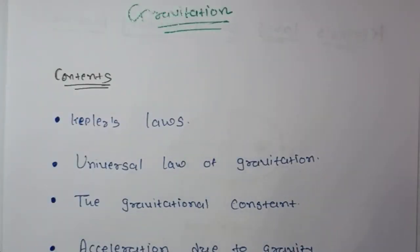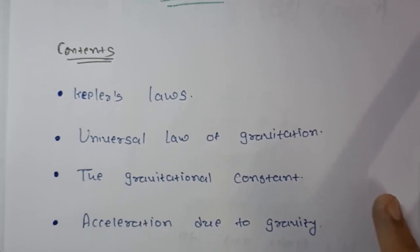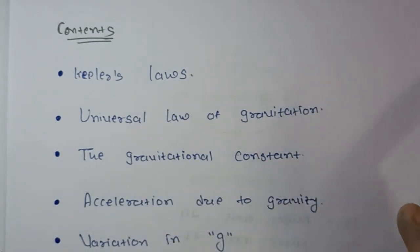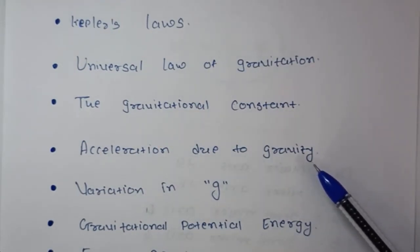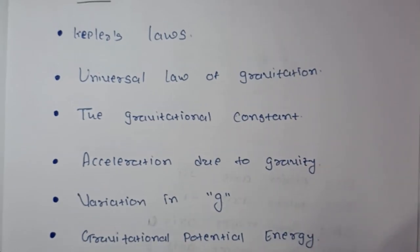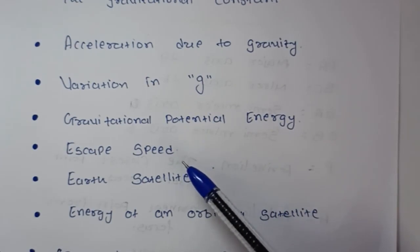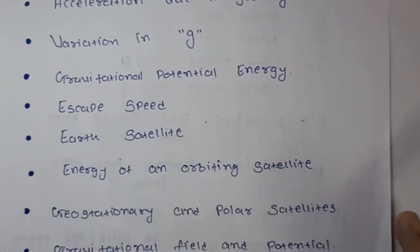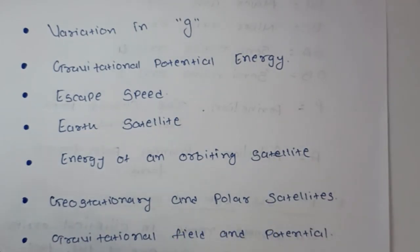Hello students, we are going to understand a new chapter today: Gravitation. We will discuss Kepler's laws of planetary motion, then the universal law of gravitation, the gravitational constant G, acceleration due to gravity (small g) and its variation with various parameters, gravitational potential energy, escape speed from Earth and other satellites, energy of an orbiting satellite, and finally geostationary and polar satellites, gravitational field, and gravitational potential. So let us begin.